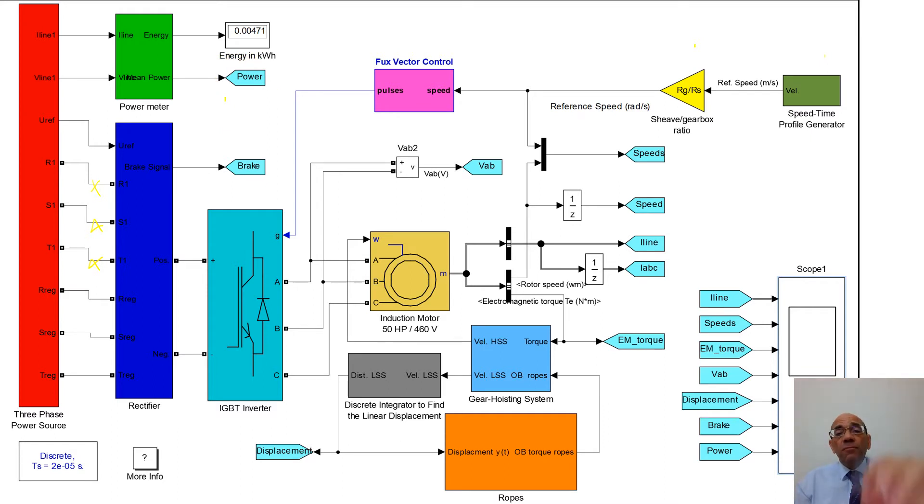We have other components represented here. So we have the geared hoisting system. Here we have the ropes, representing the rope system and the roping, the mass of the ropes and so on. This is the scope. And on the scope, we can actually see various outputs and variables, as you will see in a minute. Now, what is hidden from us in these blocks, inside each one of these blocks, there's more detail and that is actually a good approach, which is very modular. It encapsulates all the details.